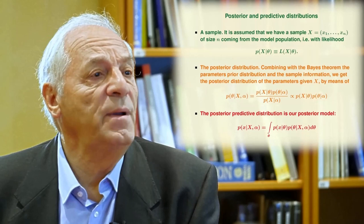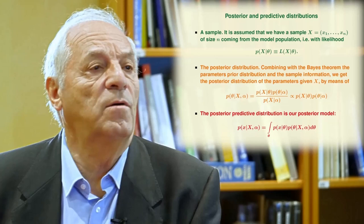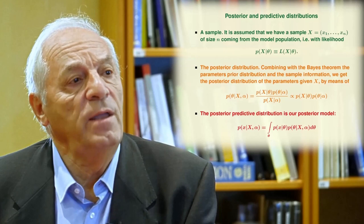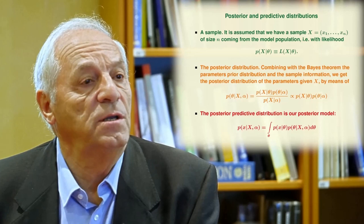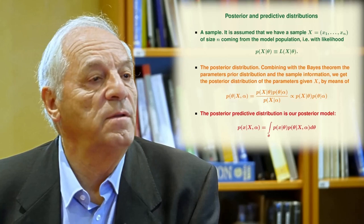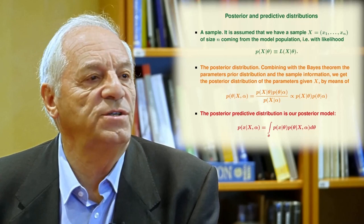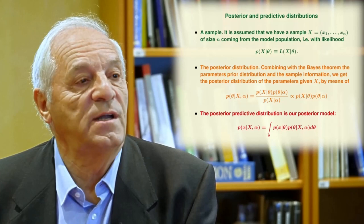Then we describe the samples, and we need to know the likelihood of the sample — that is, the probability of obtaining the different samples. With the sample and the prior, we can obtain the posterior distribution. We can combine the prior and the sample with Bayes' theorem to obtain the posterior distribution, which is really only the product of the prior and the likelihood. And when we know the posterior, we can calculate another predictive distribution — the posterior predictive — which is a weighted distribution of our model with weights given by the posterior distribution.